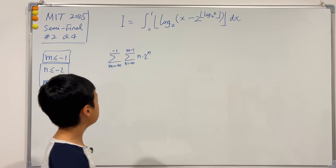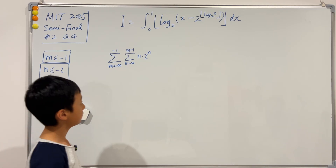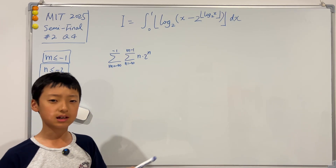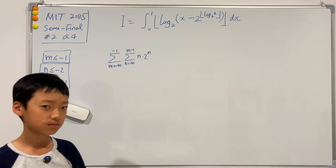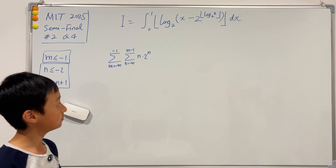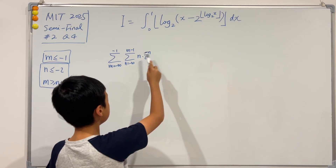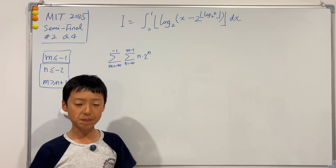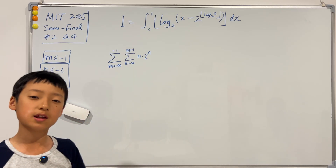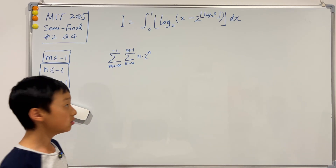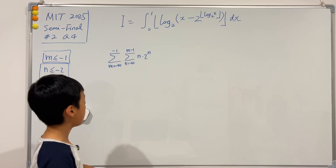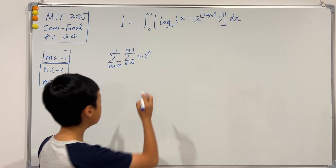Now I'm going to try to swap these two sums. To do that, we first have to prove absolute convergence. We know n is less than negative 1, so 2^n is actually 1 over 2 to some positive power — meaning it converges. Also, 2^n dominates n, so there is absolute convergence, and we can swap the two sums around.